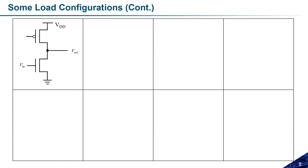The first combination is to connect the gate of this pMOS transistor — the load transistor — to ground. Suppose I have connected this gate terminal to ground. How will this circuit behave? Will it act as an inverter or not?